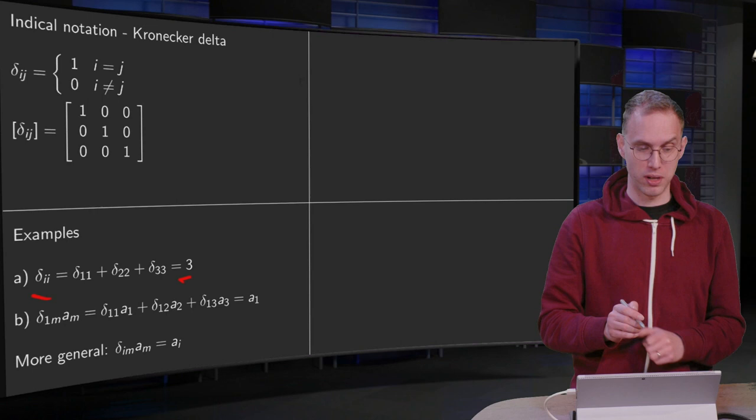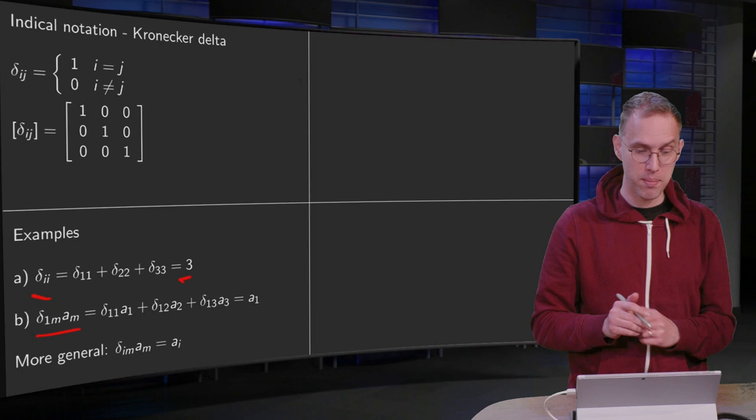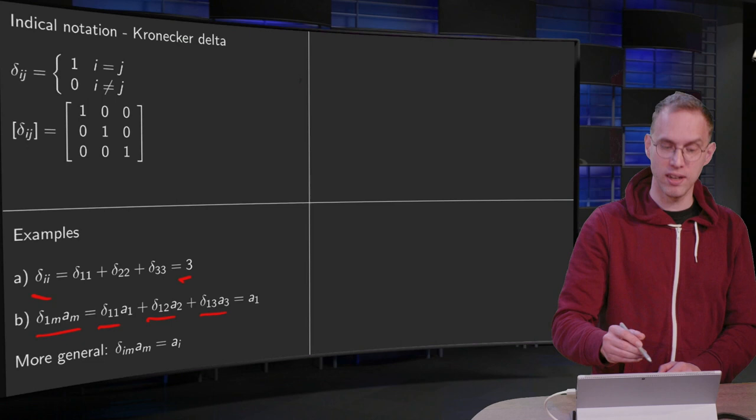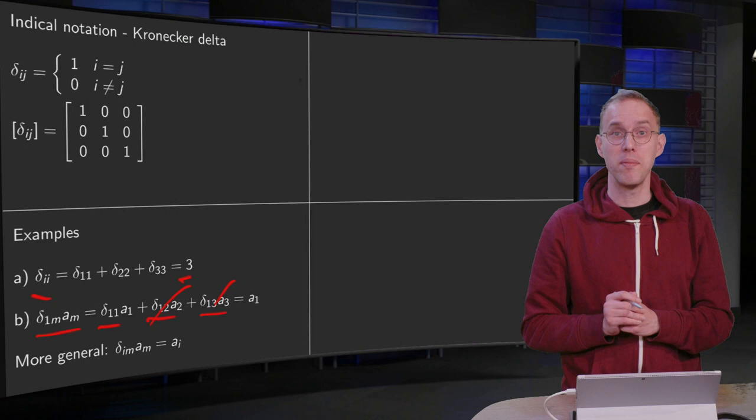Next example: what happens if we compute delta 1m times am? Now we have to sum over m, so we get delta 11·a1 plus delta 12·a2 plus delta 13·a3. Now those two are 0, so we get a1. So the delta 1m·am picks out the first component of a.